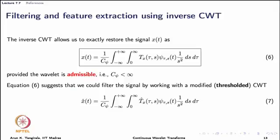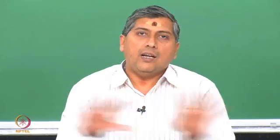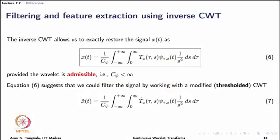Now let us discuss the final application of the continuous wavelet transform in this lecture: filtering and feature extraction using the inverse CWT. Very often there are features in a signal that we would like to extract while leaving aside the rest. For this we look at the synthesis equation — C_psi is the admissibility constant — and this expression suggests that we can reconstruct a part of the signal by working with a modified CWT, where modification means thresholding the CWT coefficients.